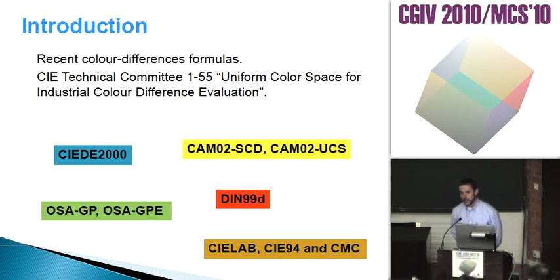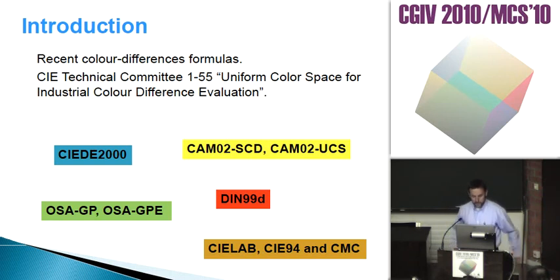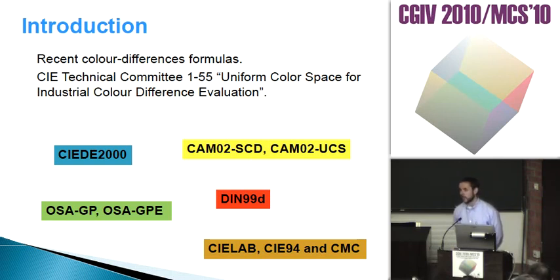The state of the art in this field — in this technical committee — is that with different experimental data we get different results. One formula can be the best for one data set and a different one for another data set, as we will see today. There are many recent color difference equations since the publication of Delta E 2000.